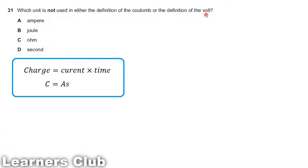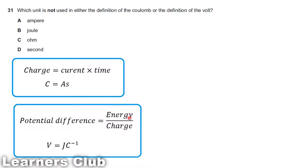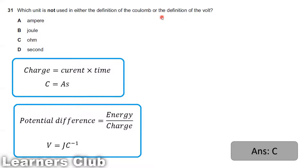Volt is the unit of potential difference or EMF — that is energy per unit charge. Energy is in joule per coulomb, so joule is given in option B, meaning we use option B to define volt. We are not using option C, ohm. Ohm is the unit of resistance.